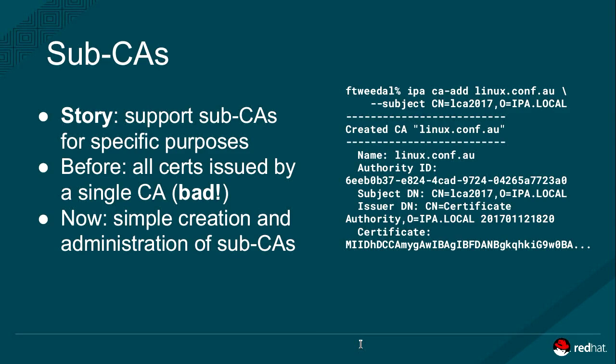One big feature close to my heart as a PKI wonk is the sub-CAs feature. Previously, all certificates issued by a FreeIPA server were issued by a single CA — that could be a root CA or chained to some external CA like from Active Directory or elsewhere. This is unfortunate because all certificates, cryptographically speaking, are in a single domain of validity. So if you have certificates issued for different purposes, such as service certificates for websites or email servers versus user client certificates for connecting to a VPN, unfortunately they'll all be considered valid if you're anchoring your trust at a particular CA.